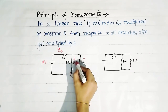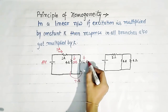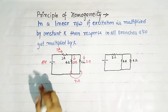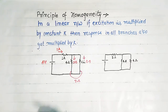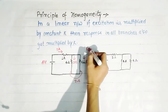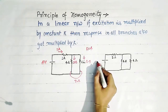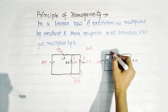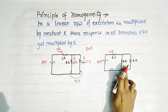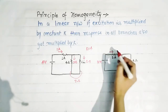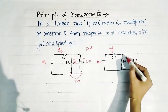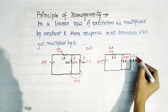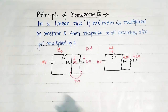This 1 ampere current will divide among these two 4 ohm resistances equally, so here current is 0.5 ampere and here also current is 0.5 ampere. Now suppose if this 4 volt is multiplied by constant k equals to 4, so it becomes 16 volt. The current here will be 16 divided by the equivalent resistor plus 4 ohm, which gives 4 ampere.